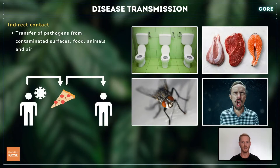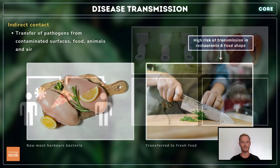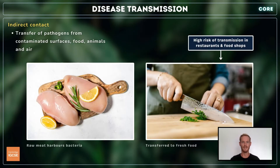Indirect contact refers to the transmission of pathogens via contaminated surfaces, food, animals, and particles in the air. For example, raw meat harbours bacteria that are killed off when cooking. If, however, raw food is prepared using the same knife or cutting board, or the chef doesn't wash their hands, bacteria from the meat can be transferred and ingested.